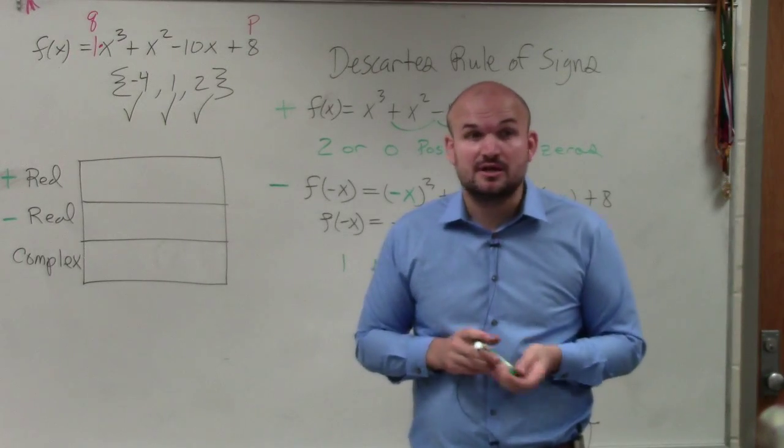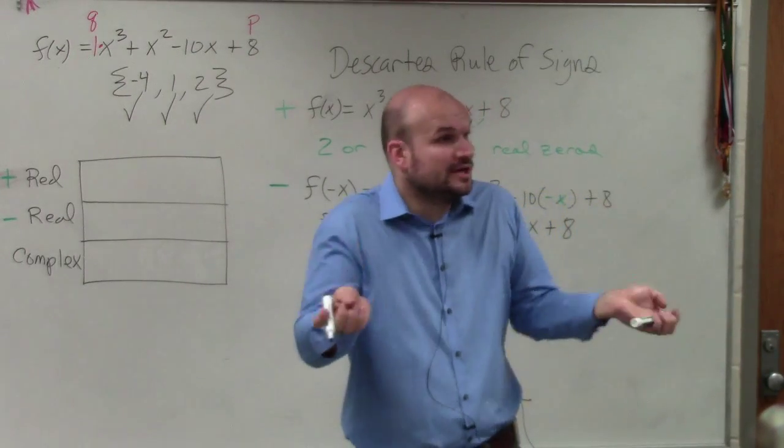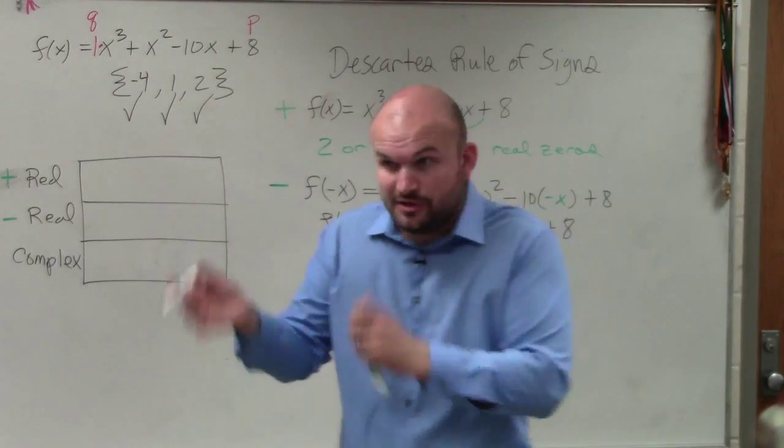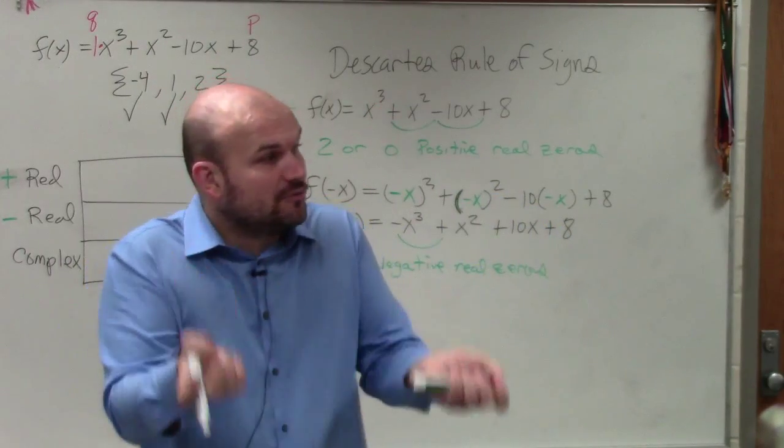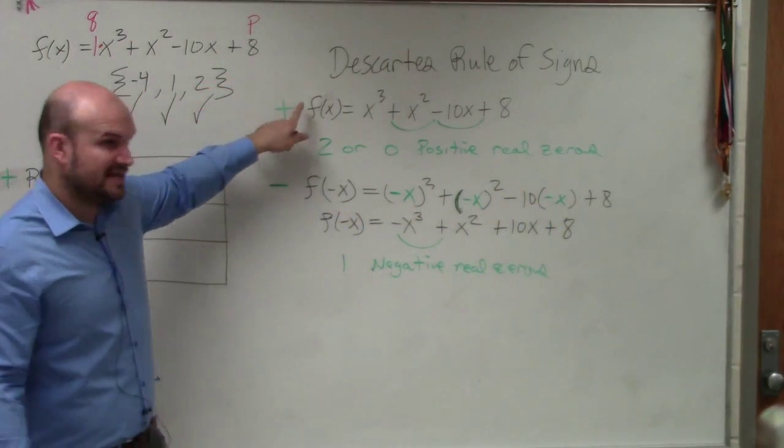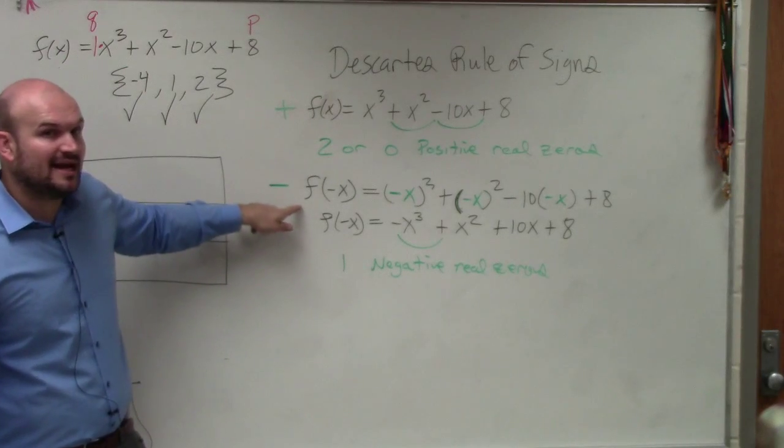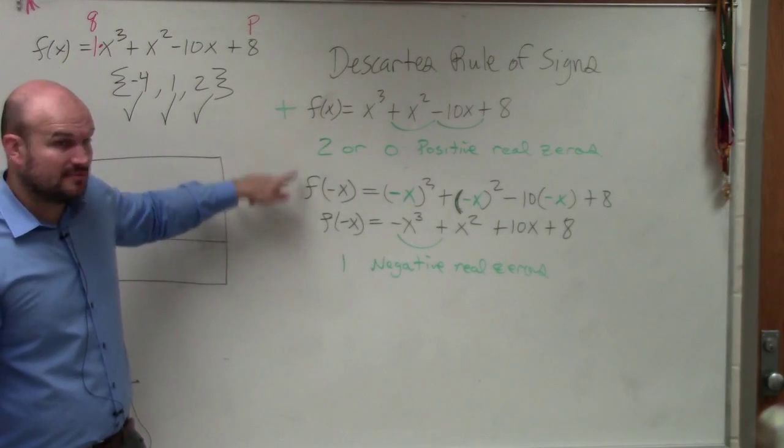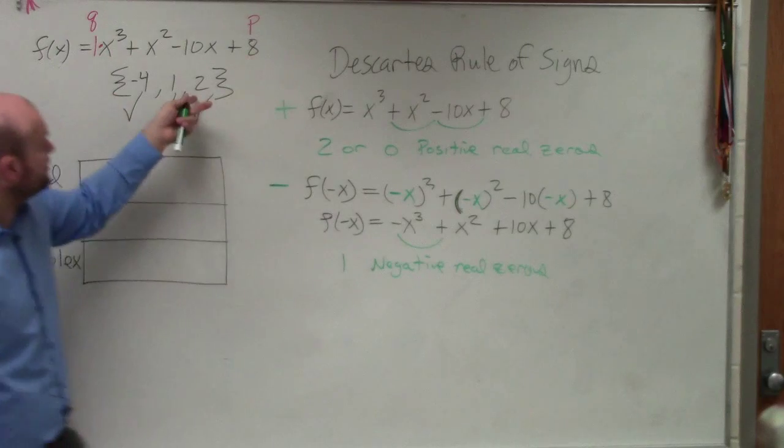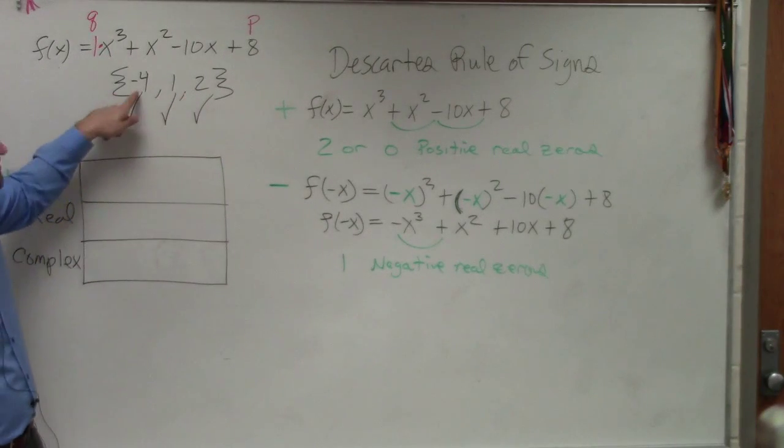Those are the three types of zeros. You can have real. They're either real or they're imaginary, right? They're either real or complex. But if they're real, we found out they could either be positive or they could be negative, right? Guys, look it. Can your real zeros be positive or negative?